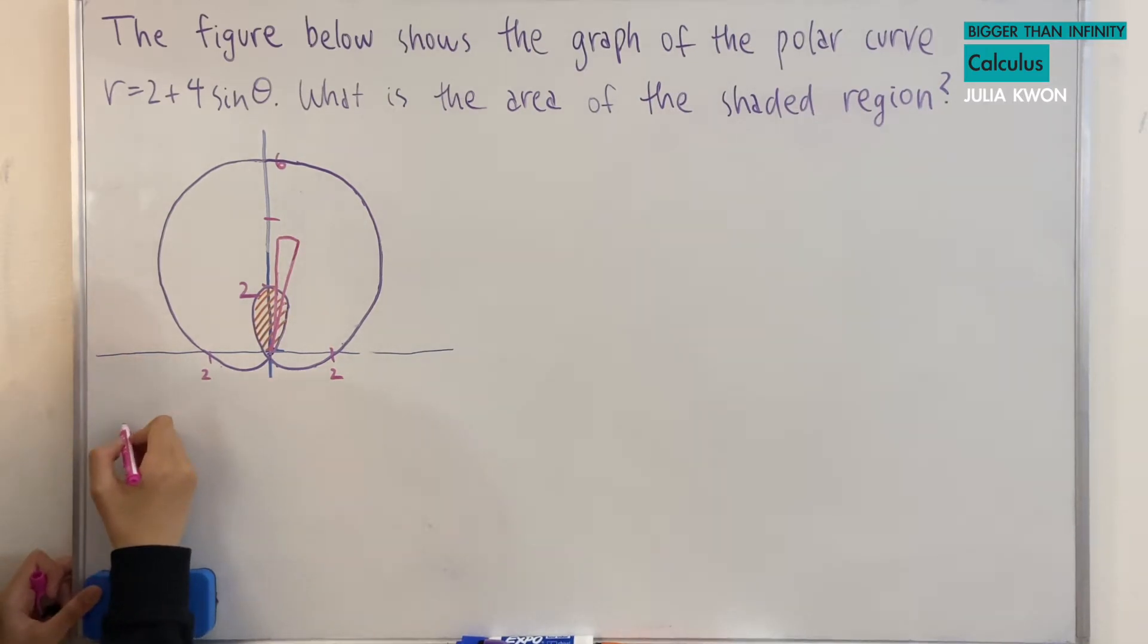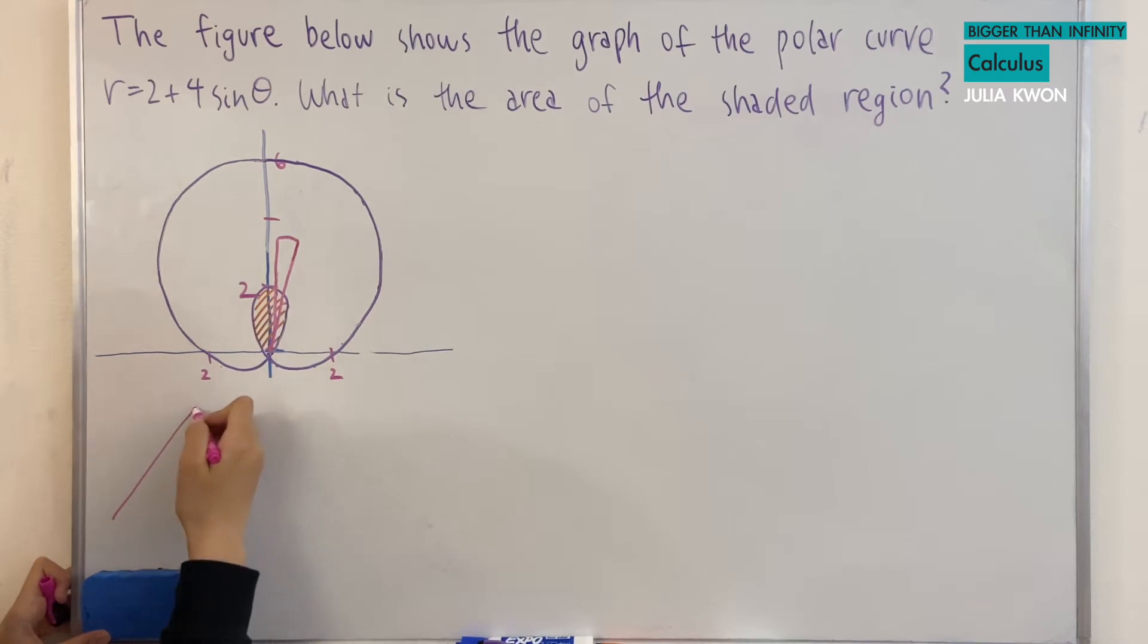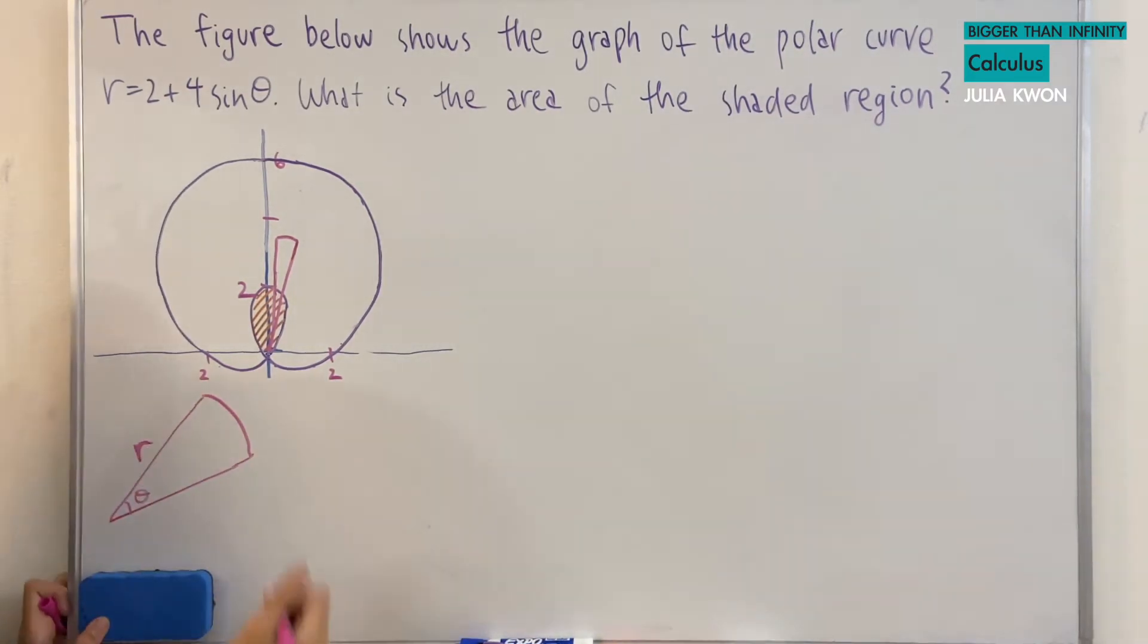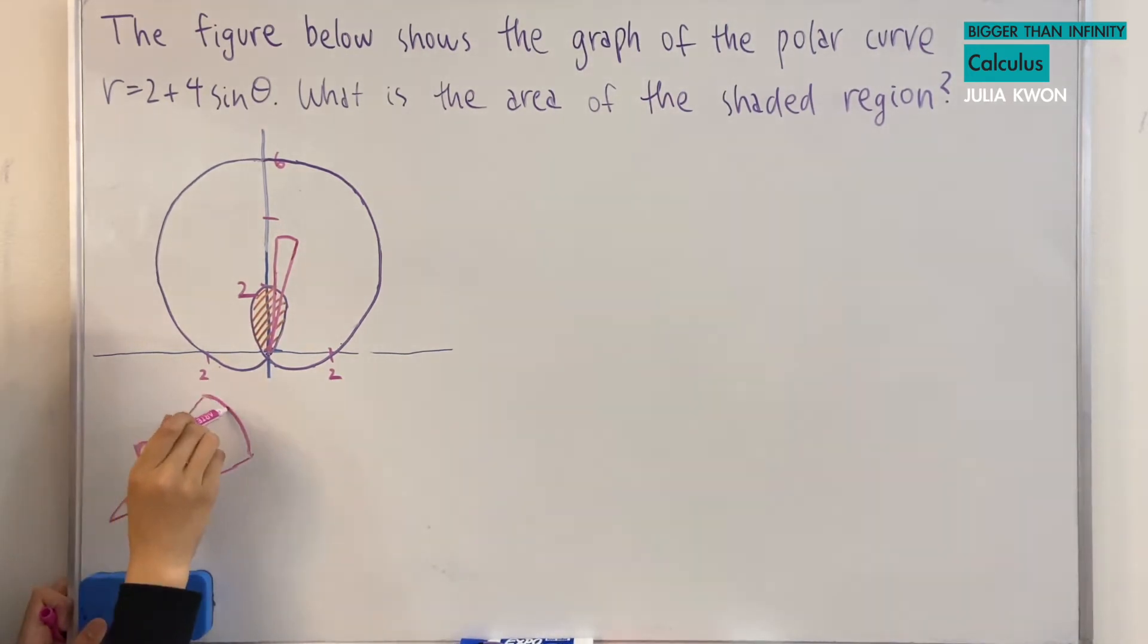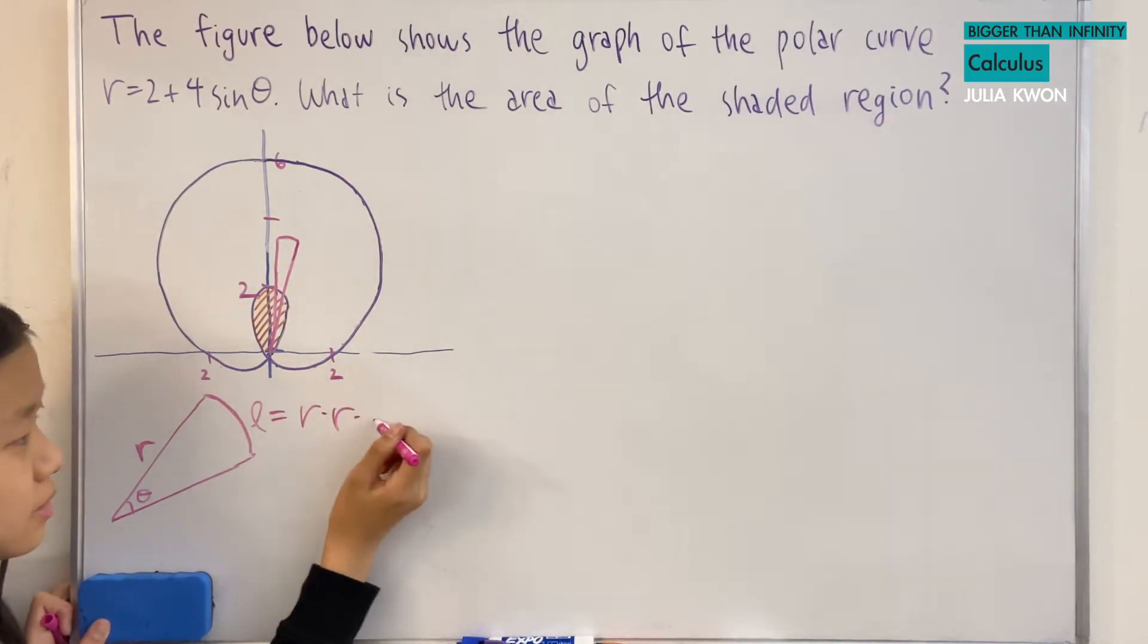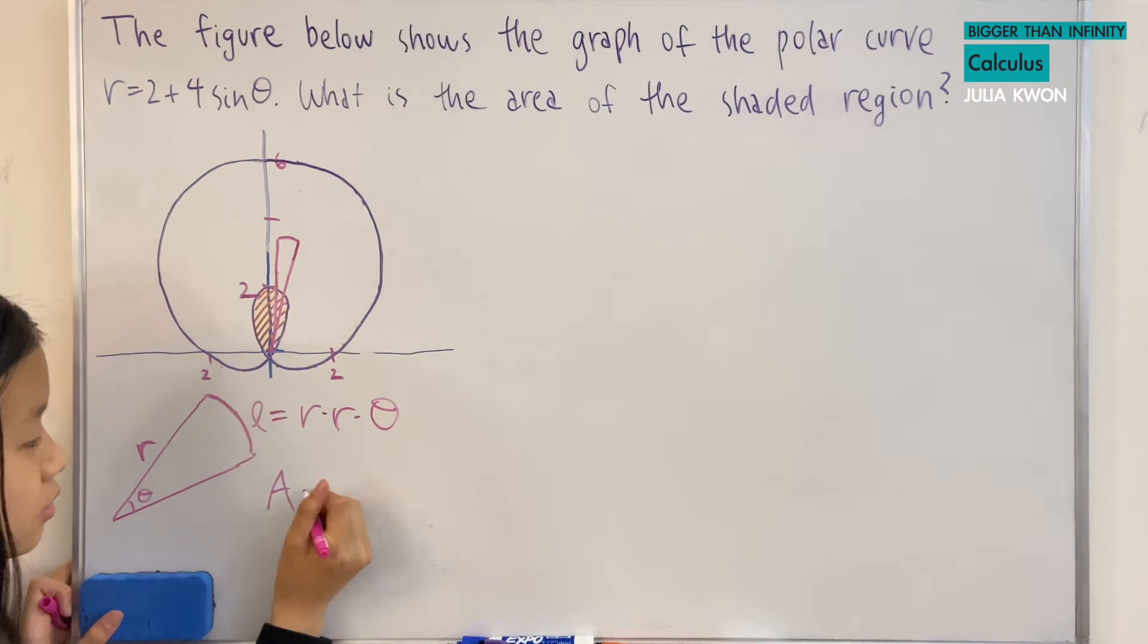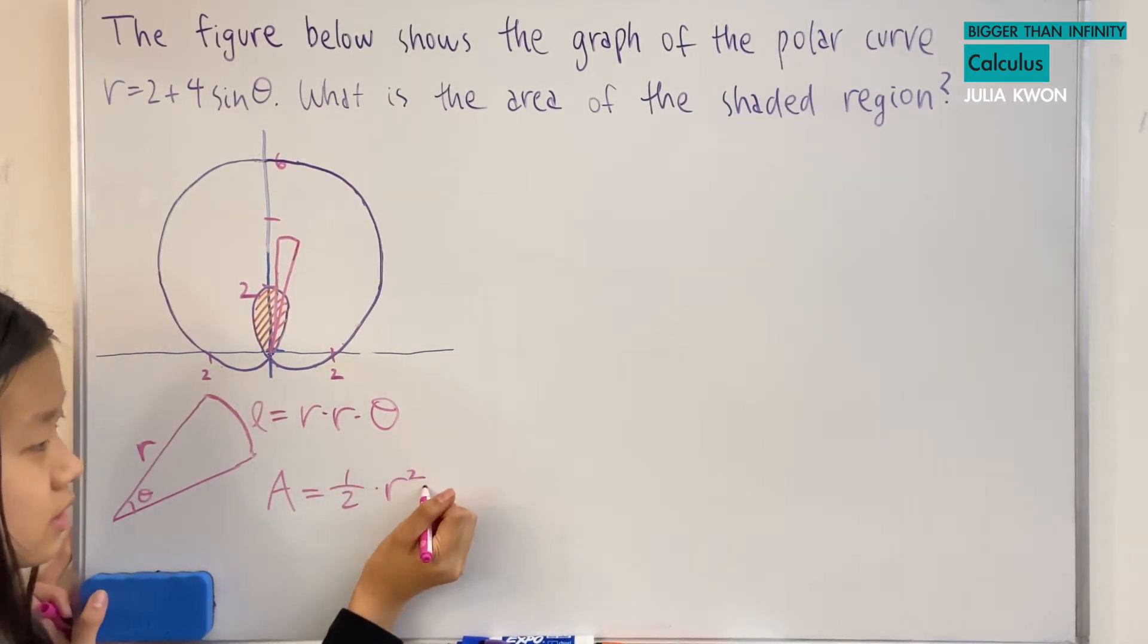Okay, so first I'll draw this a little bit bigger so that you guys can see it. We're going to call this angle theta and this length, of course, r. And the length of this arc L is equal to r times theta, right?